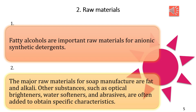The major raw materials for soap manufacturing are fats and alkali. Other raw materials include optical brighteners, water softeners, and abrasives, which are often added to obtain specific characteristics such as specific order and performance. These are the raw materials involved in the manufacturing of soap and detergents.